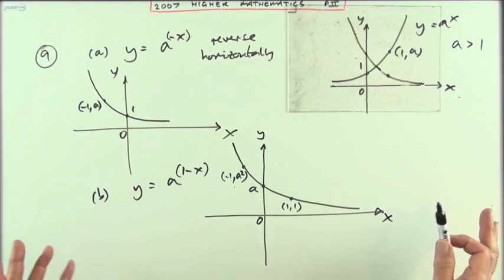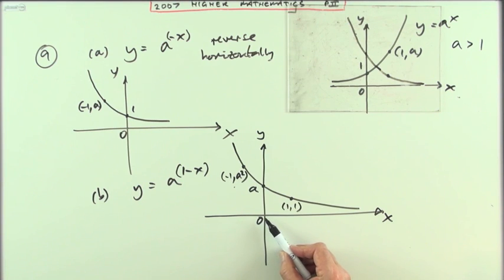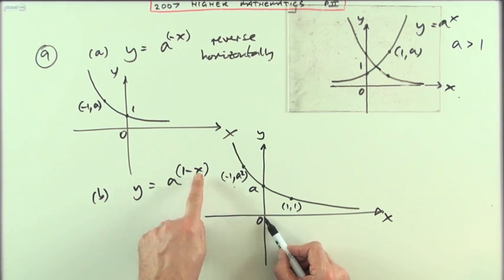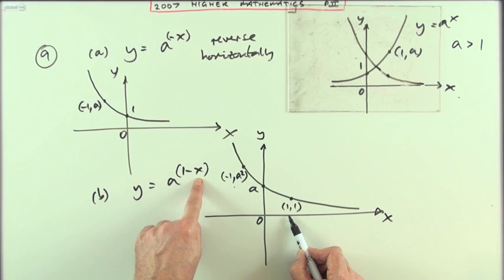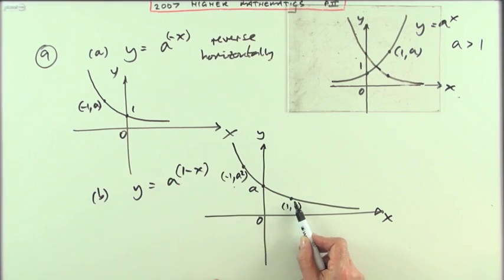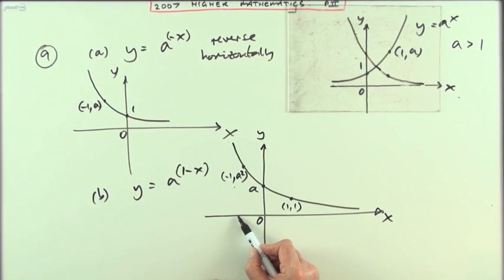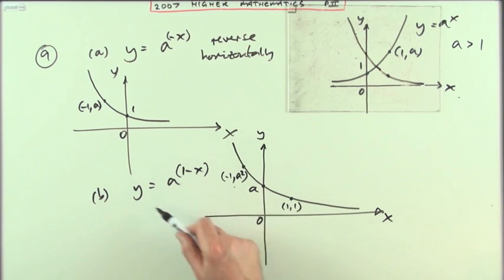But those were the transformations of the original points, though I suppose you could have done that without considering the transformation, just by saying 'right, I don't know what's happening here, so I'll just pick values of x and put them in.' So what happens when x is 0? When x is 0 I've got 1 take away 0 is 1, so I've got a. What happens at 1? When x is 1 I've got 1 take away 1 is 0, a to the 0, anything to 0 is 1, so I've got (1,1). What happens at negative 1? At negative 1 I get the answer a squared, and then draw the graph through them. You could have done that instead of even considering transformations of graphs.